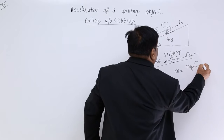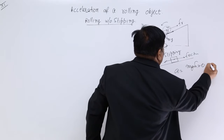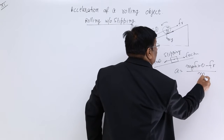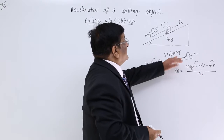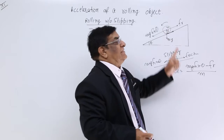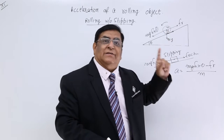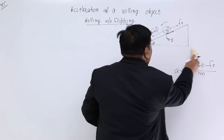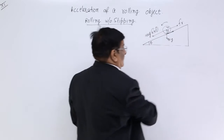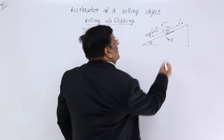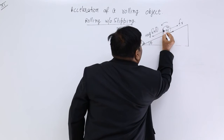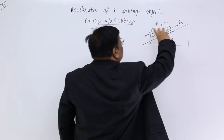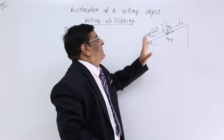That gives the acceleration when it is slipping down. But here the case is different, so the acceleration will also be different and that is what we need to find out. Since this body is rolling, it is rotating as well and using certain energy in rotation.